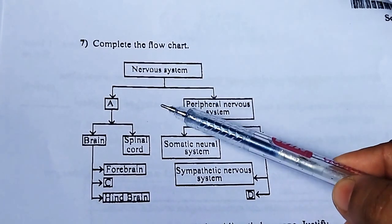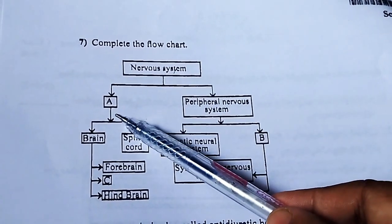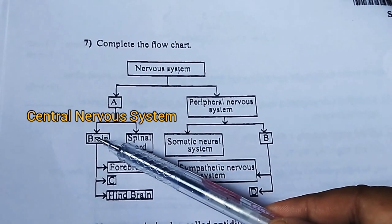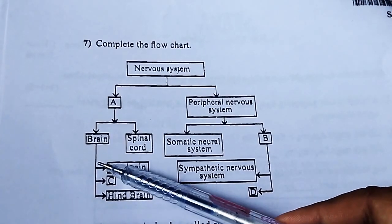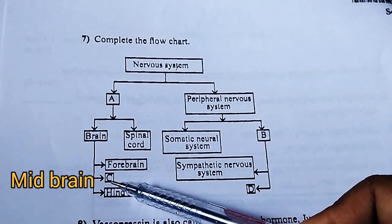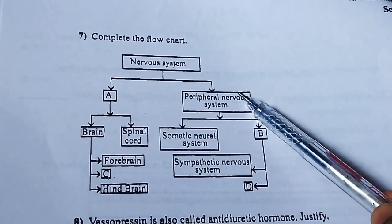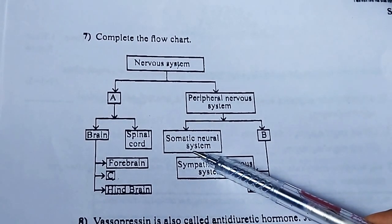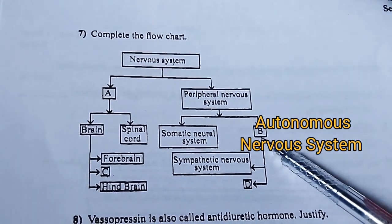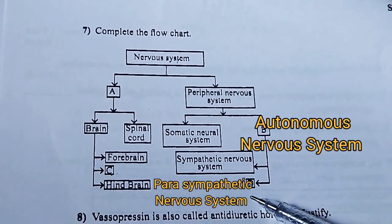Question 7: Complete the flow chart of the nervous system. Nervous system divides into: 1. Peripheral Nervous System, and 2. Central Nervous System (CNS). The brain is divided into Forebrain, Midbrain, and Hindbrain. The Peripheral Nervous System includes the Somatic Neural System and the Autonomic Nervous System.